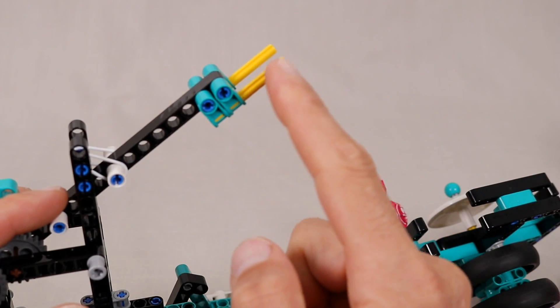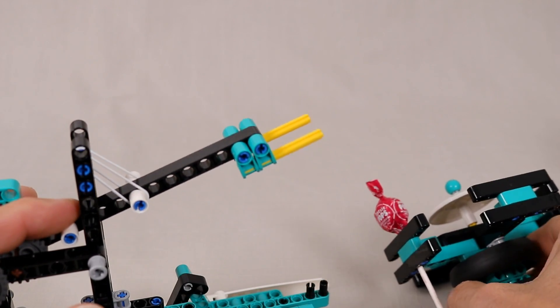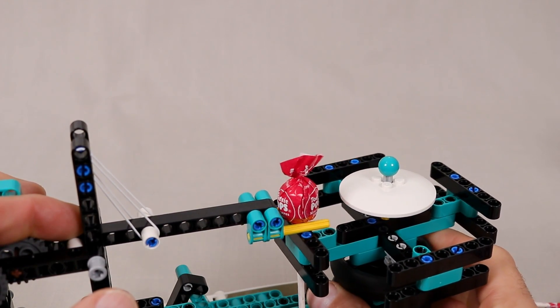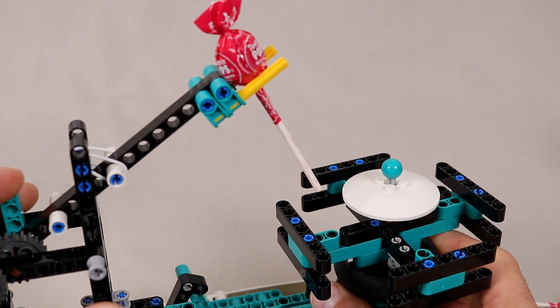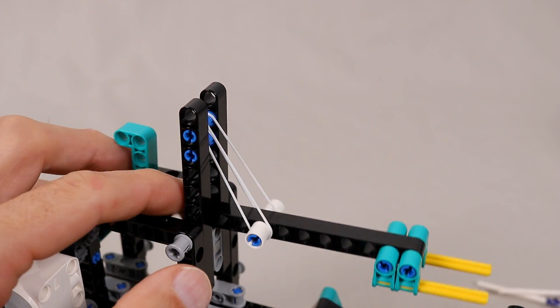The catapult arm has two Technic axles on the end which slot under either side of the lollipop to pull it out of the supply. The arm is spring-loaded using these two rubber bands.